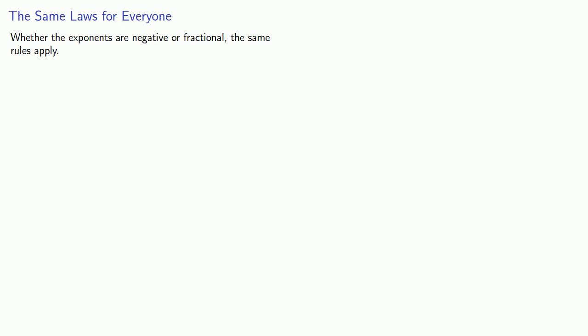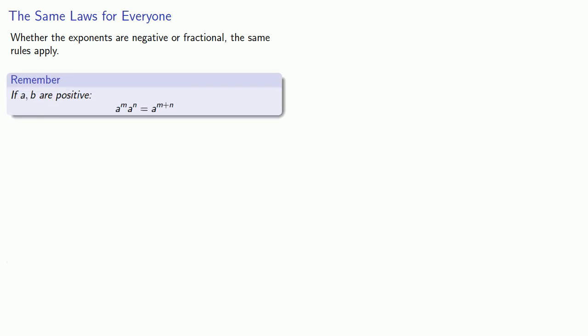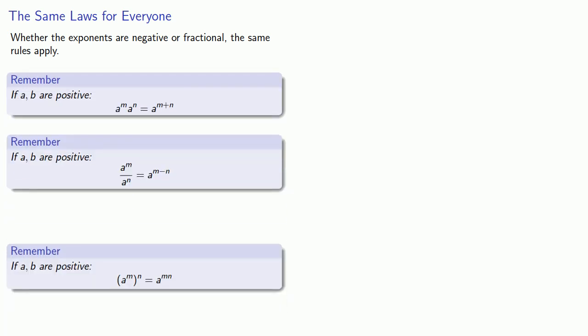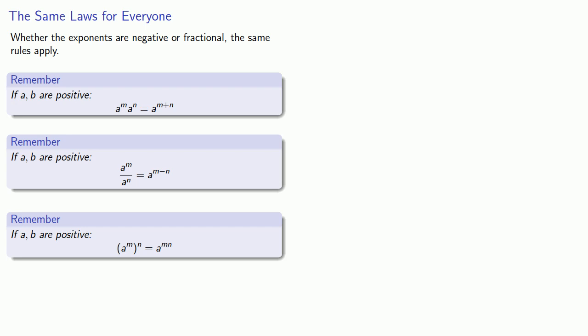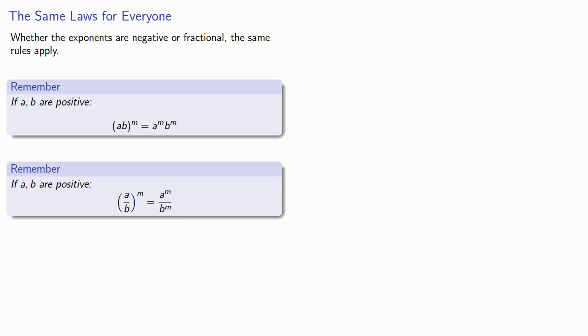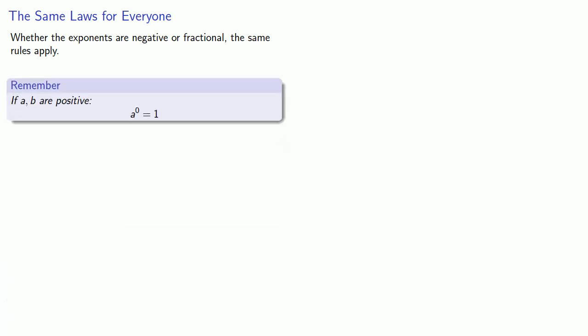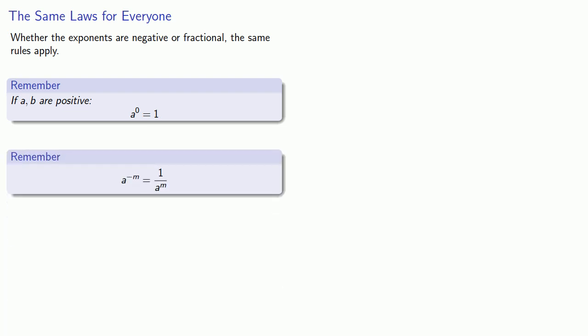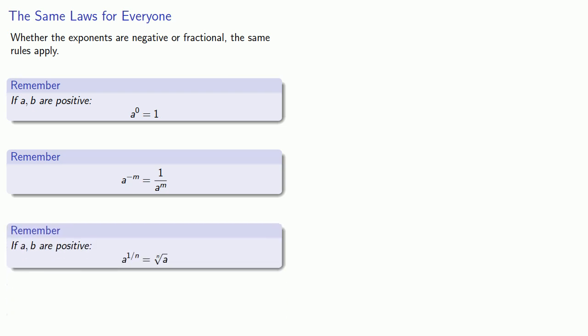A useful feature about mathematics is that the same laws apply to everything — whether the exponents are negative or fractional, the same rules still apply. Here's a flash review: if we multiply, we add the exponents; if we divide, we subtract. If we raise a power to a power, we multiply the exponents. If we raise a product or quotient to a power, the exponent applies to both. Exponents of zero equal one; a negative exponent means one over; and a fractional exponent corresponds to a root.